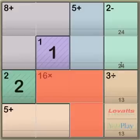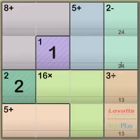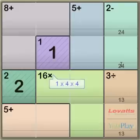Three numbers, when multiplied, equals 16. Now, the options are either 1, 4, 4 or 2, 2, 4.